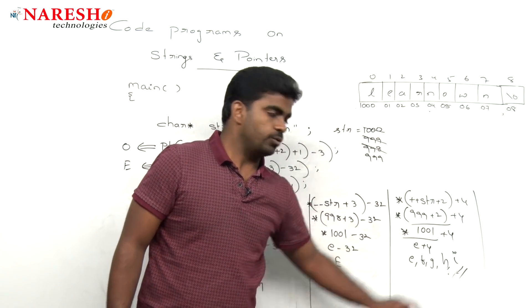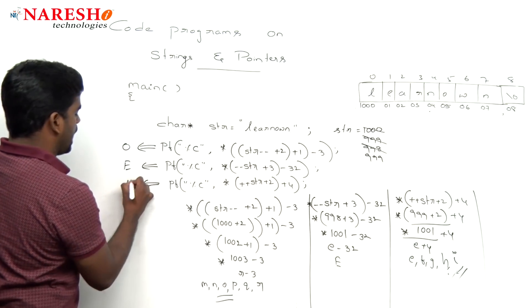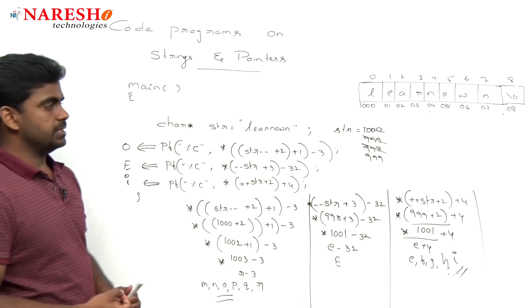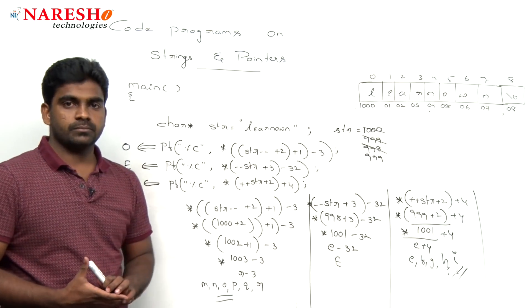Here it is plus 4, right? So that is why 1, 2, 3, 4. So here it is what? I will be displayed. O, capital E, I is the output of this code.